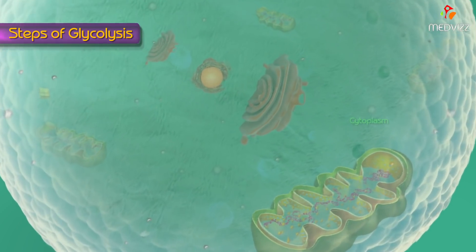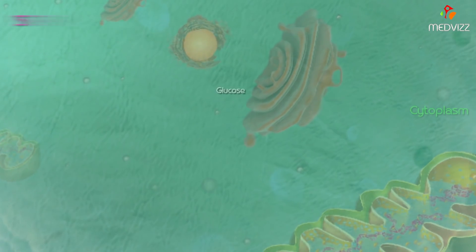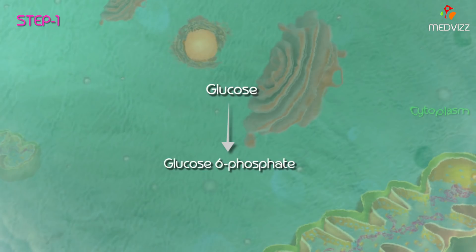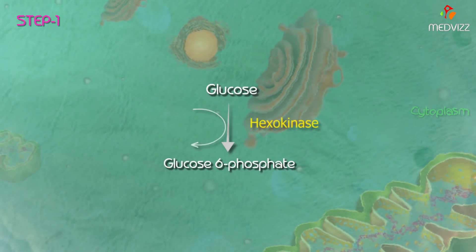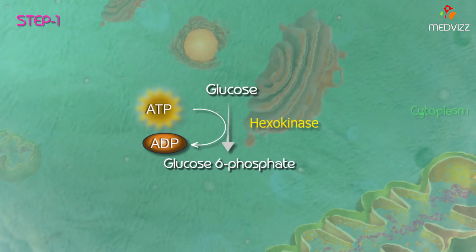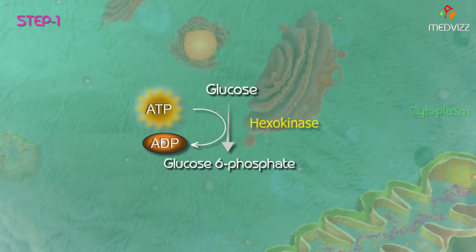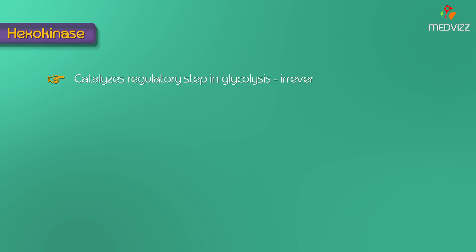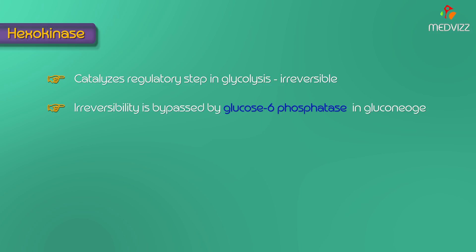Now let us discuss the steps of glycolysis. In step 1, glucose is phosphorylated to glucose 6-phosphate in the presence of the enzyme hexokinase, along with the hydrolysis of ATP. Hexokinase is present in almost all the tissues of the body, and the same step is mediated by glucokinase in the liver. Hexokinase catalyzes the regulatory step in glycolysis — it is irreversible, but this irreversibility is bypassed by the glucose 6-phosphatase enzyme in gluconeogenesis.